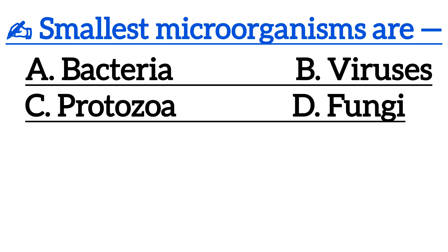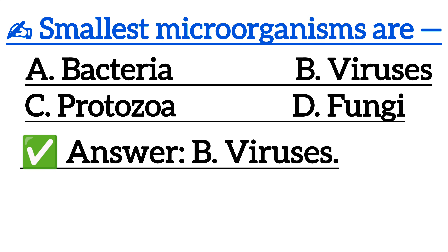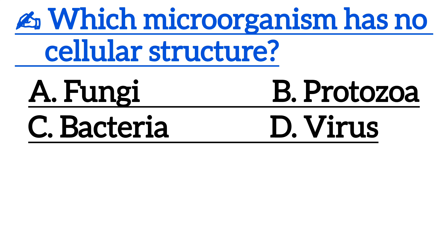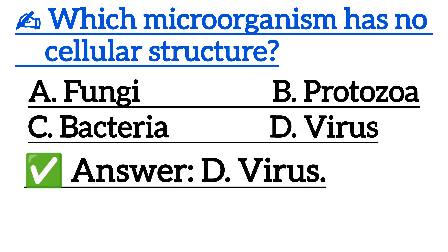Next one is: Smallest microorganisms are — Option A: Bacteria, Option B: Viruses, Option C: Protozoa, Option D: Fungi. Correct answer is Option D: Virus.